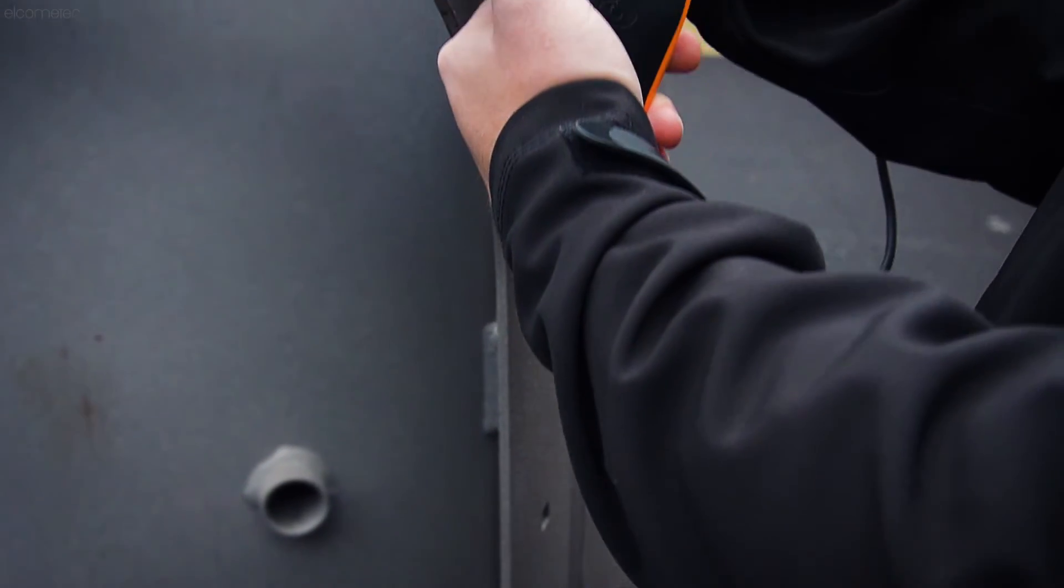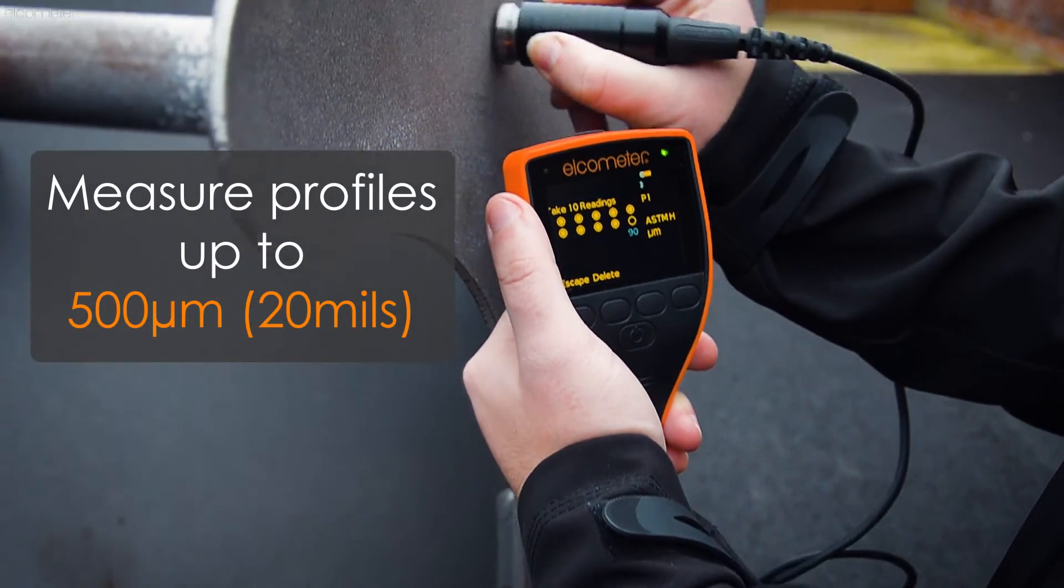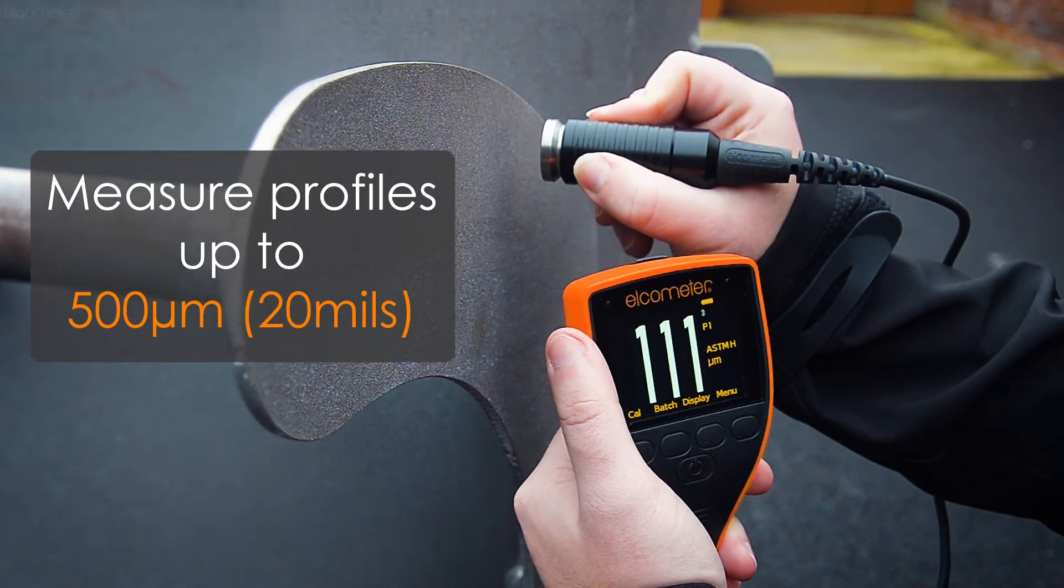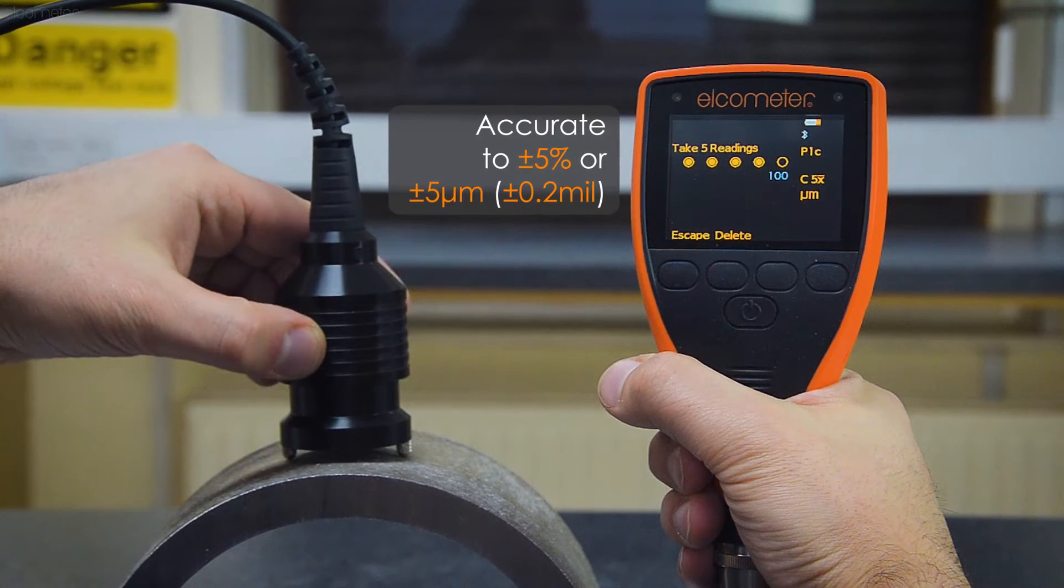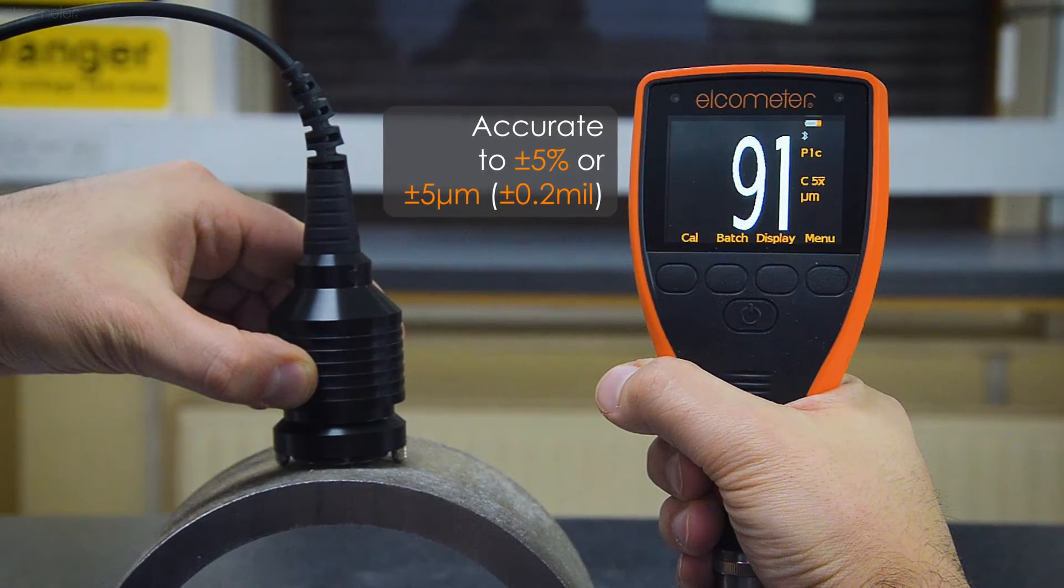With the ability to measure profiles up to 500 microns or 20 mils on flat or curved surfaces, the Elcometer 224 digital surface profile gauge provides repeatable and reproducible measurements.